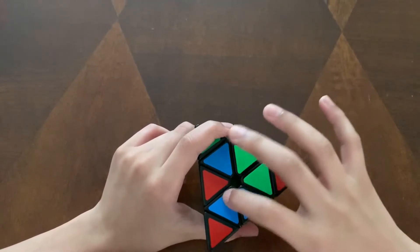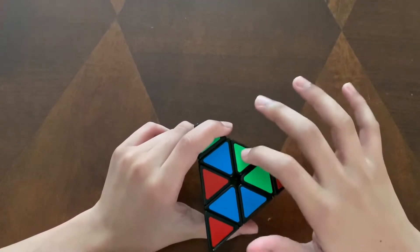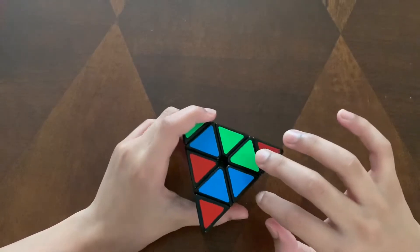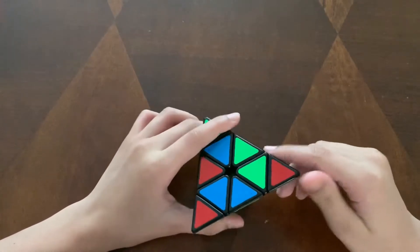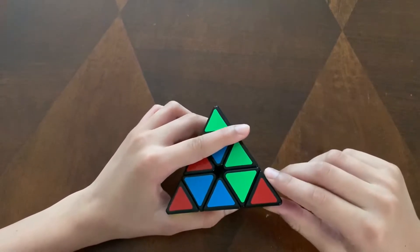This one, these three. And these ones are edge pieces because they have two faces. Then we have our cornered ones which are not important at all because they're always going to be oriented the correct way.